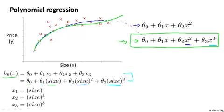In order to map these two definitions to each other, the natural way to do that is to set the first feature x one to be the size of the house, and set the second feature x two to be the square of the size of the house, and set the third feature x three to be the cube of the size of the house. And just by choosing my three features this way, and applying the machinery of linear regression, I can fit this model and end up with a cubic fit to my data.